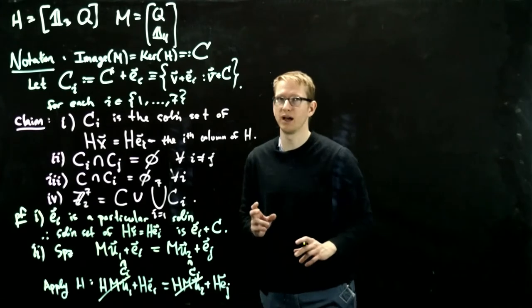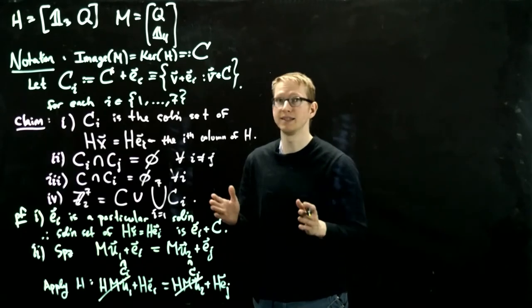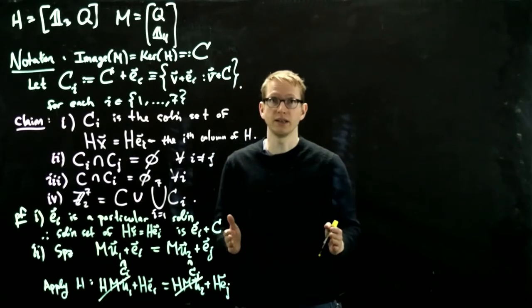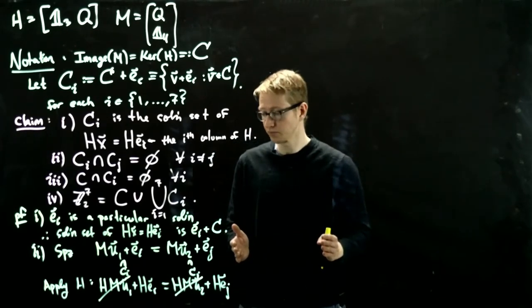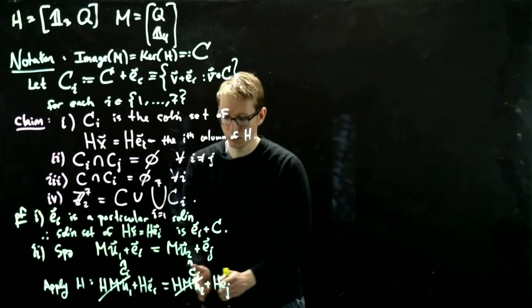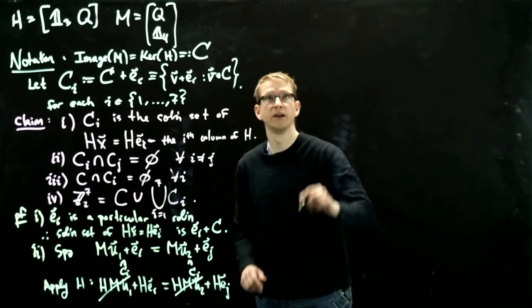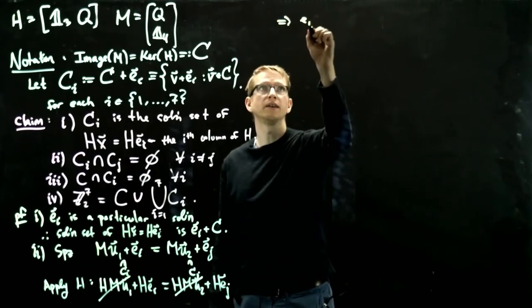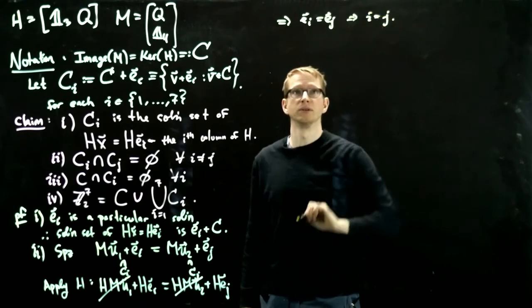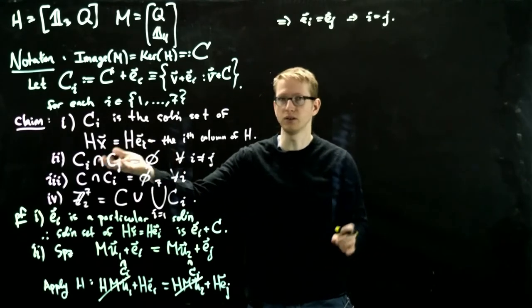Now the only way that this is possible is if i and j are both equal to each other, and the reason is because H, by definition, is the set of all non-zero vectors in Z mod 2 to the third power, and they never repeat. So we only use those vectors once and only once, and the only way that these two columns of H are equal to each other is if those indices exactly matched up. This implies E_i equals E_j, which implies i must equal j. So this says the only common intersection among all of these is if the indices are the same.